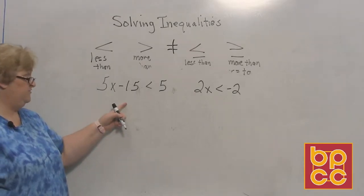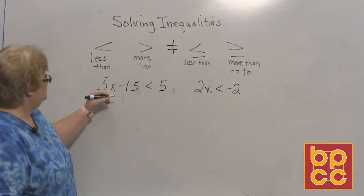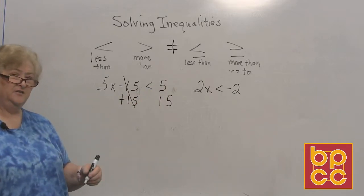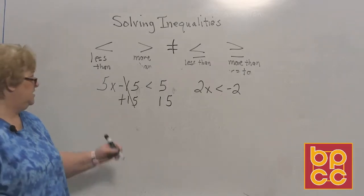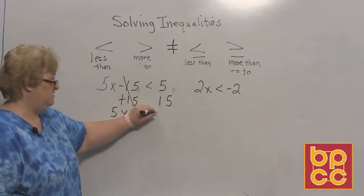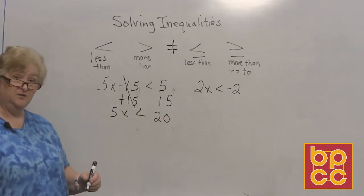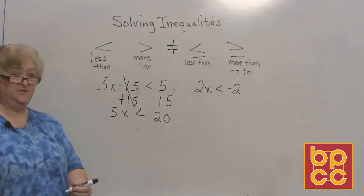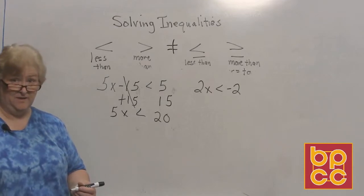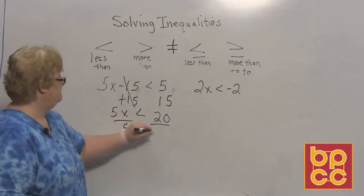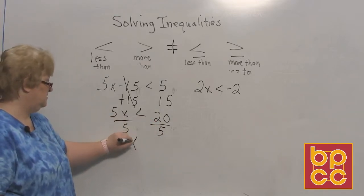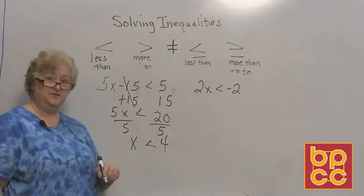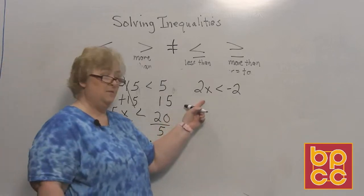We need to add the opposite to the 15 and move it to the other side. So let's add a positive 15 — that clears that out. Now the only thing different here is I have a lot of x's: I now have 5x is less than 20. So the only thing I need to do is divide by 5. 5 into 5 is 1x, the sign remains the same because x was never negative, and 5 into 20 is 4. The answer is x is less than 4.